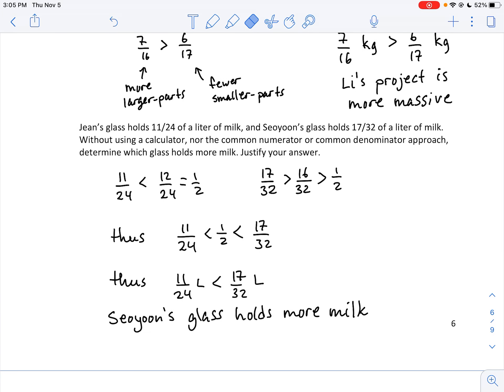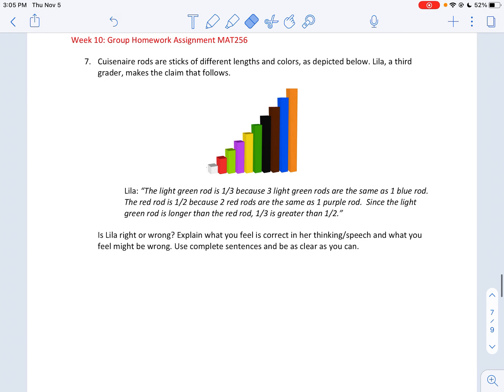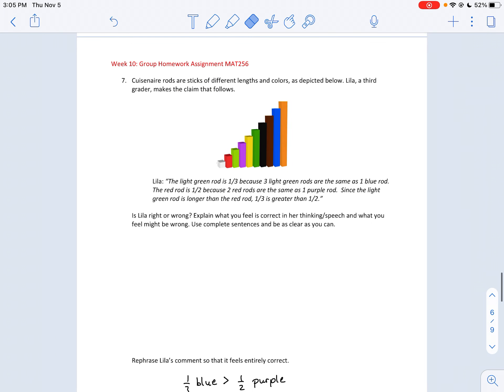And I did this last one here by using a benchmark of one half. I saw that 11/24ths was less than a half, but 17/32nds was more than a half. Therefore 17/32nds of a liter is more than 11/24ths of a liter. Now, number seven was an interesting one.